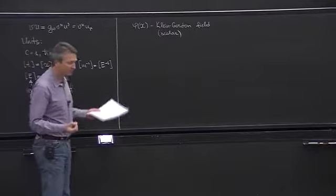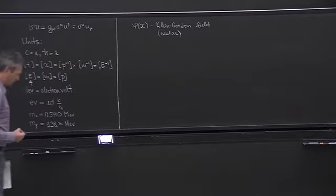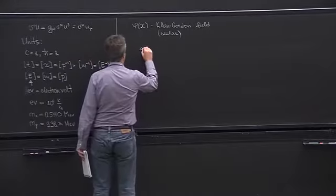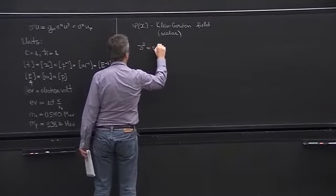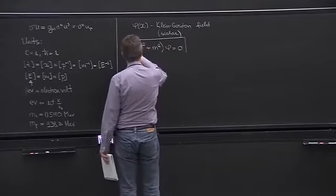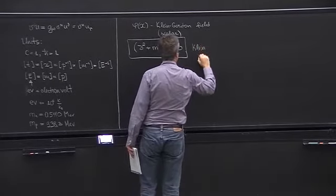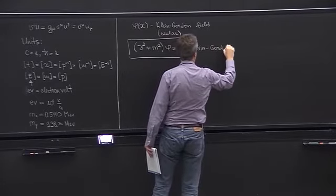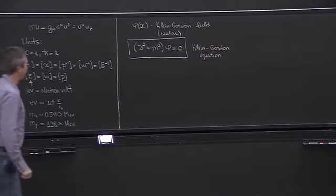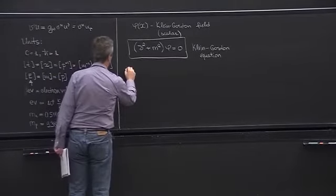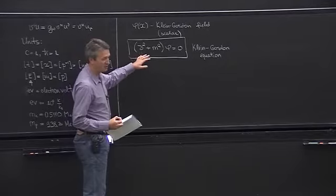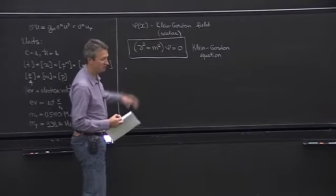We need to write down some equation that the field satisfies — like Maxwell's equations for electric and magnetic fields. This should be a second-order differential equation, and actually there is not much choice. The only equation that we can write is the Klein-Gordon equation.